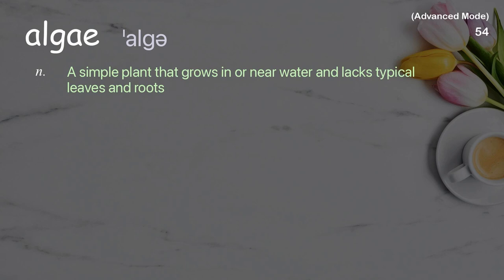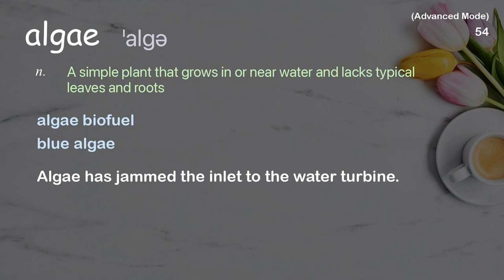Algae: A simple plant that grows in or near water and lacks typical leaves and roots. Examples: Algae biofuel, Blue algae. Algae has jammed the inlet to the water turbine.